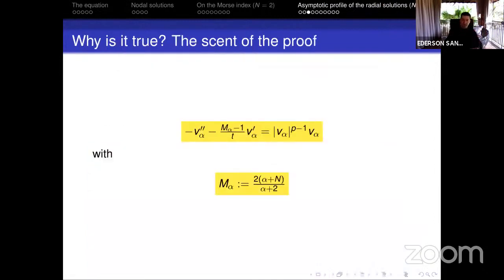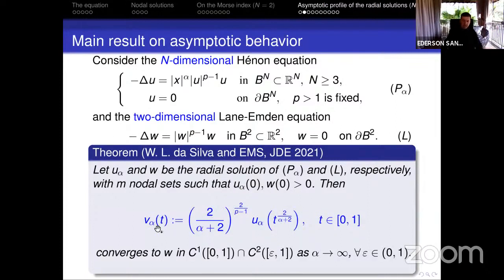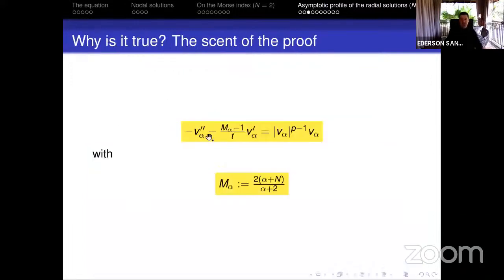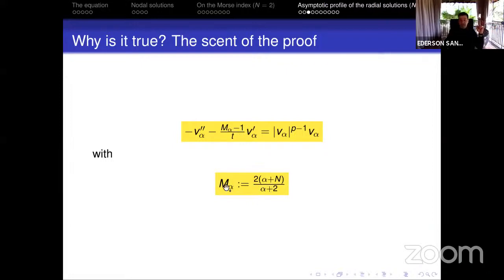Just to give a flavor of how this may be true using this change of variable: if you calculate the formula for the Laplacian, we get that v_alpha satisfies this equation. Here m_alpha is a number that is not necessarily an integer, but it is precisely the rate that — if m_alpha were an integer — would be the radial Laplacian. As alpha goes to infinity, this number tends to 2, so this approaches the two-dimensional radial Laplacian with no weight. I think I'm out of time, and I thank you very much for your attention.